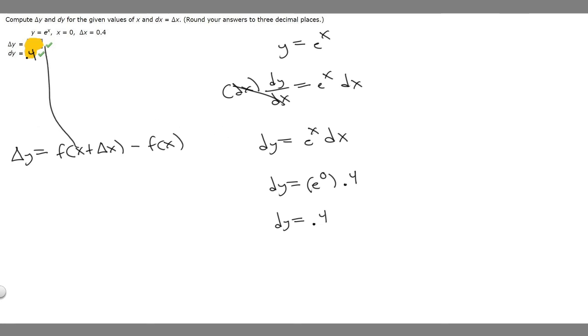So f of x is just our function y right here. So basically, we're going to do delta y equals e raised to x plus delta x. So x is 0 and delta x is 0.4. So it's basically just e to the 0.4.